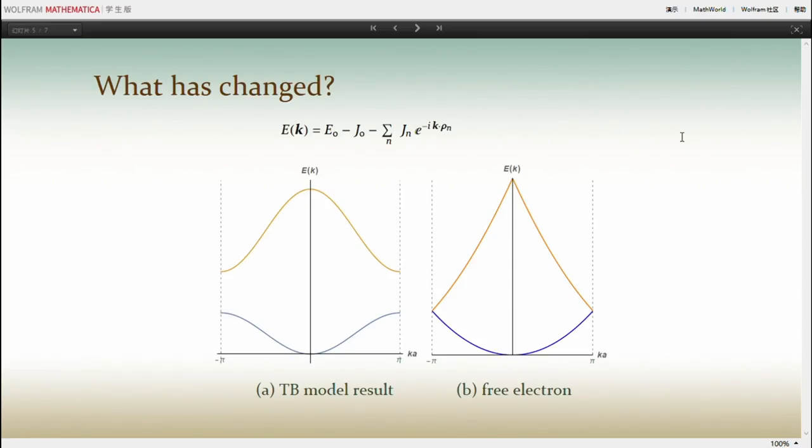Now let's see what has happened after applying the tight binding model to a one-dimensional system. Assuming that the distance between atoms is A, each atom in a one-dimensional atom chain has two nearest neighbors. So the sum of the expression has two components, where rho n equals to A and minus A. By using the Euler's formula, the dispersion relation can be written as a trigonometric form.